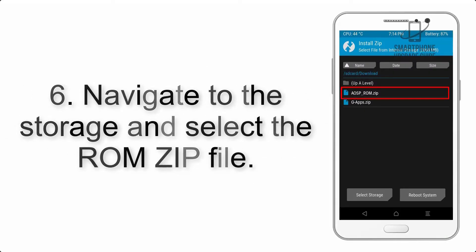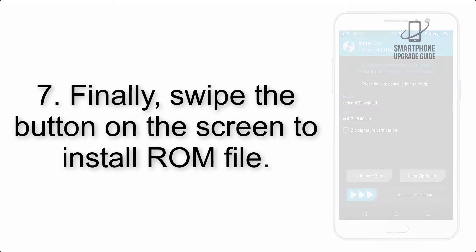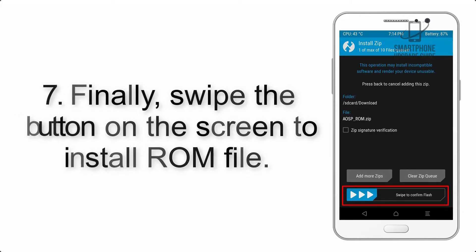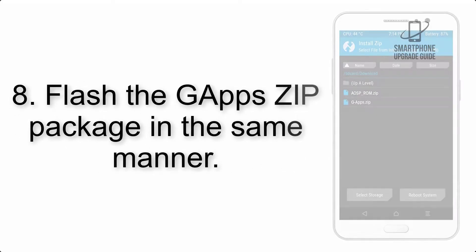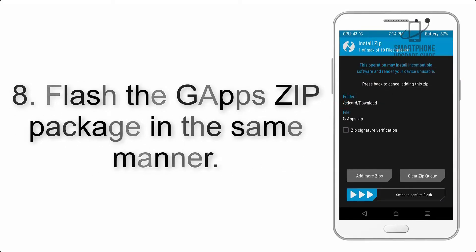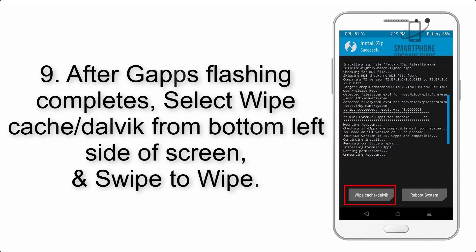Step 5: Go back to the recovery main screen and tap on the Install button. Step 6: Navigate to the storage and select the ROM zip file. Step 7: Finally, swipe the button on the screen to install the ROM file.